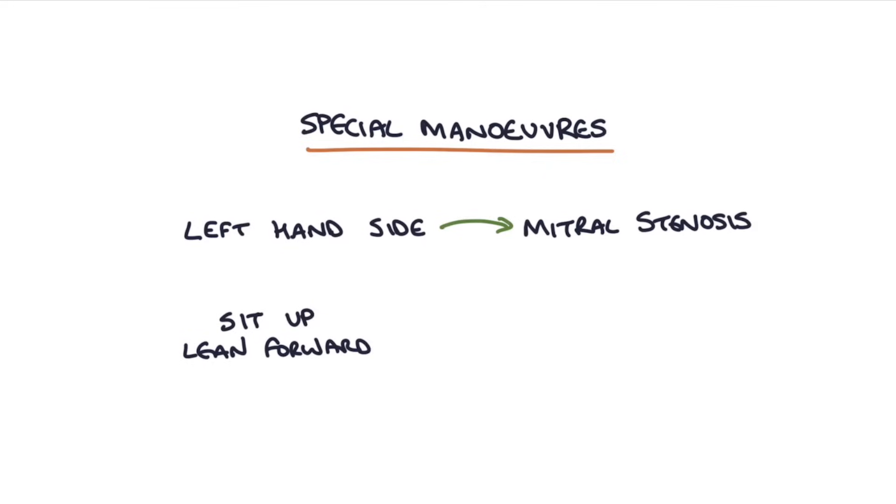There's a couple of special maneuvers you can use to look extra clever in your OSCEs. This would be to put the patient on the left-hand side, or roll them over onto their left-hand side to listen to mitral stenosis. Or you can sit the patient up, lean them forward, and ask them to take a deep breath out and hold, and this helps you to hear aortic regurgitation.